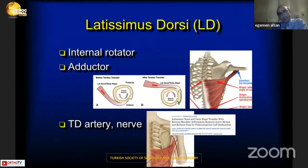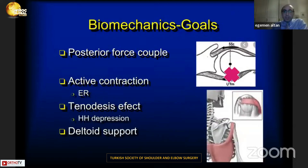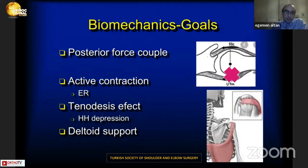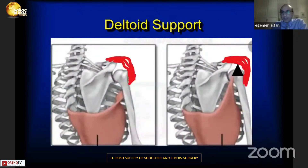Regarding the latissimus dorsi anatomy, it is an internal rotator and adductor of the shoulder, supplied by the thoracodorsal artery and nerve. Our biomechanical goals are to maintain posterior force coupling, gain external rotation with active contraction, depress the humeral head, and act as a fulcrum for deltoid support.